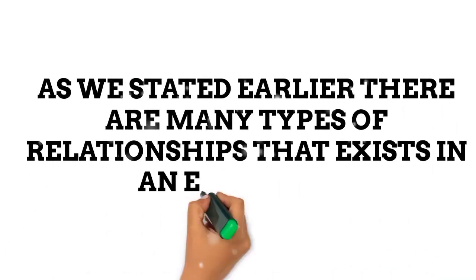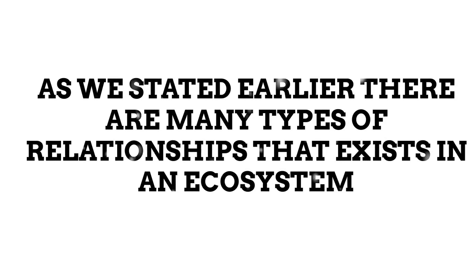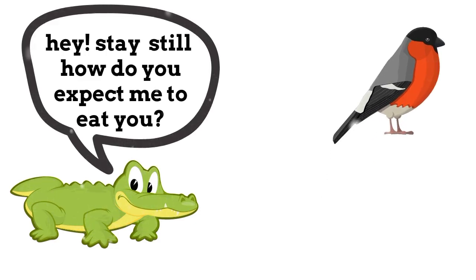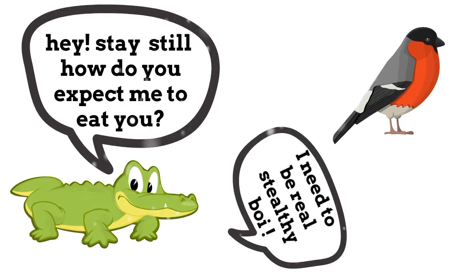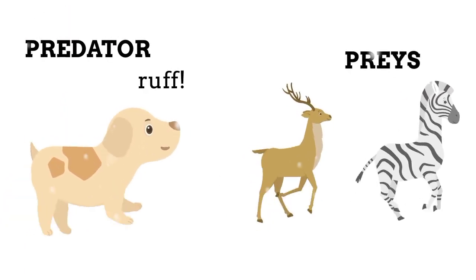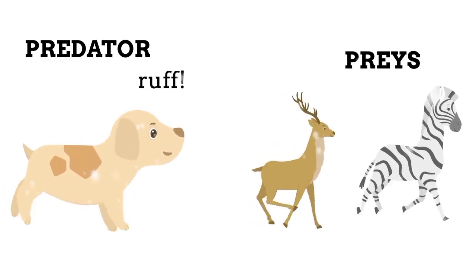As we stated earlier, there exists many kinds of relationships in an ecosystem. The first one we will be looking at is the predator-prey relationship, which you will find very harmful to one of the organisms involved. There are several characteristics that predators must have in order to successfully capture its prey. These may include being able to move quickly, moving with stealth, and being able to camouflage itself well.